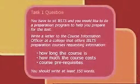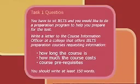It's easier for the reader of the letter if it's organised coherently. In Task 1, the way the IELTS general training question is laid out will help you in organising your response. For example, look at the following typical question for Task 1: You have to sit IELTS and you would like to do a preparation program. Write a letter to the course information officer at a college that offers IELTS preparation courses requesting information about: how long the course is, how much the course costs, and course prerequisites. You should write at least 150 words.